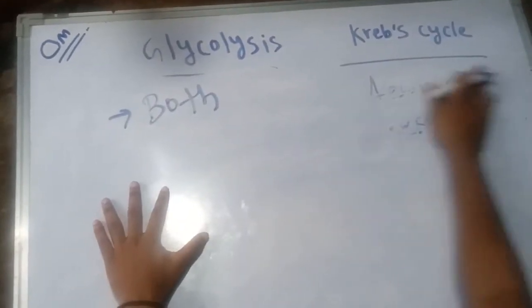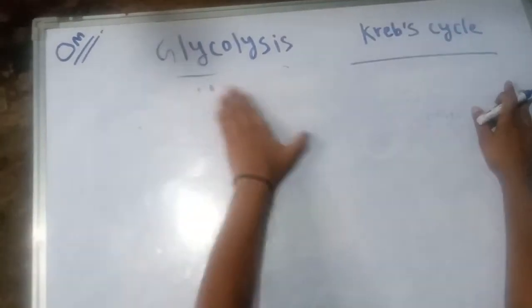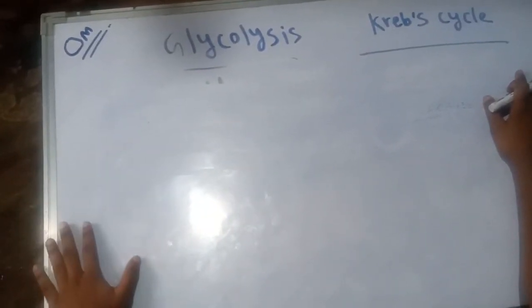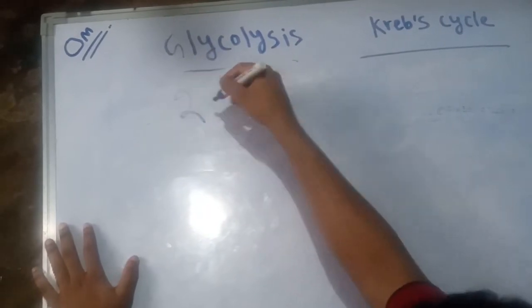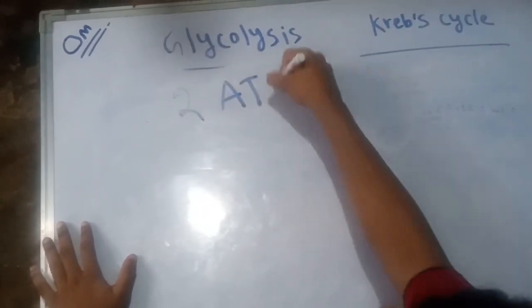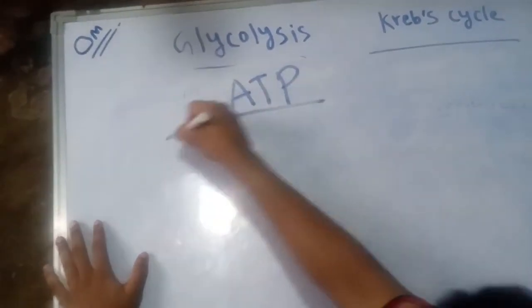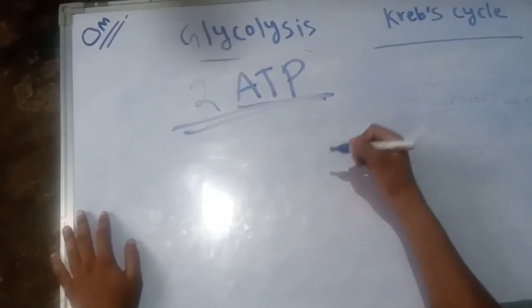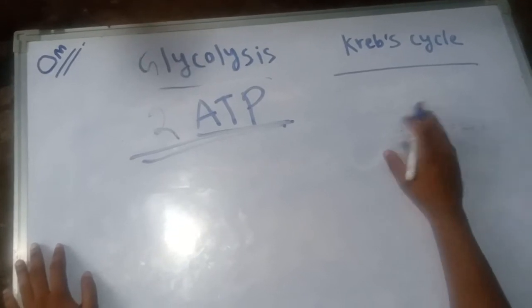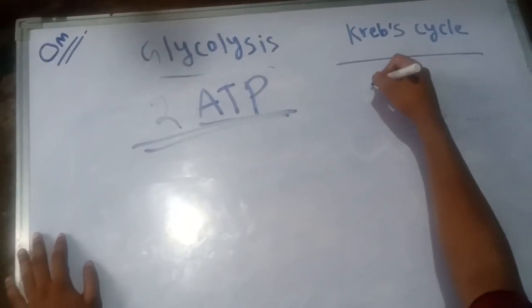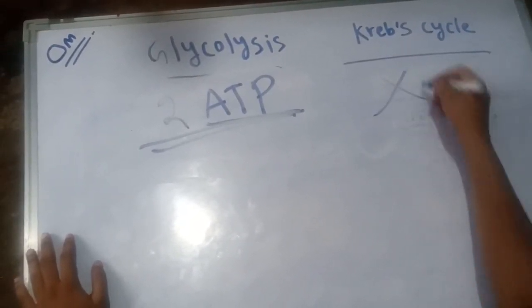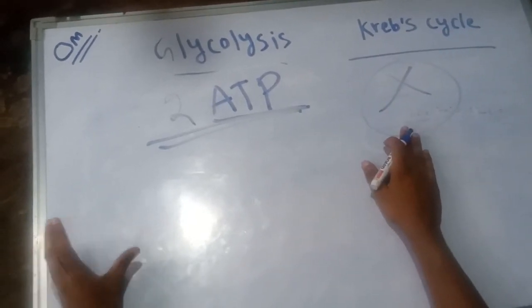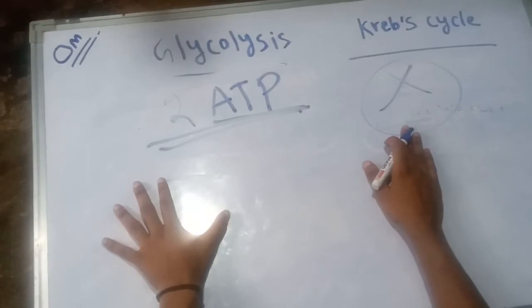The fourth difference: glycolysis consumes two ATP molecules (adenosine triphosphate). It consumes two ATP molecules. But in the case of Krebs cycle, it does not consume any kind of ATP.